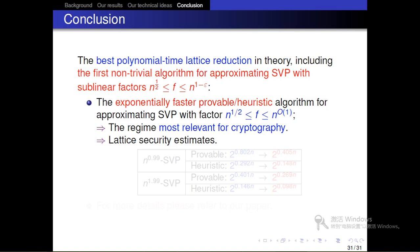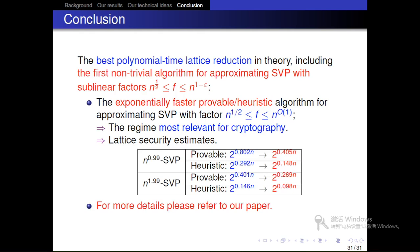In summary, we give the best polynomial time lattice reduction algorithm in theory, including the first nontrivial algorithm for approximating SVP with sublinear factors n to 1 over 2 less than γ less than n to 1. This is the regime most relevant for cryptography and should be useful in lattice security estimates. For more details, please refer to our paper. Thank you for your attention.